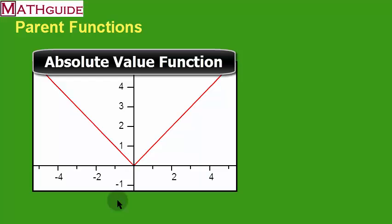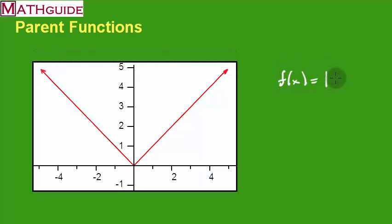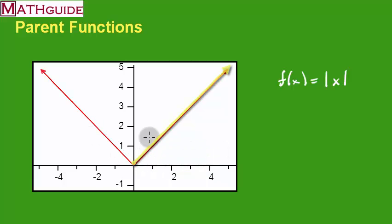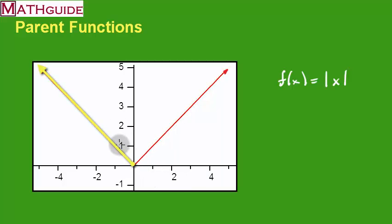For our next parent function, we have the absolute value function. The absolute value function can be written as the absolute value of x. You could always put values in front of the absolute value of x, inside the absolute value in front of x, or even outside. We could stretch this, bring these branches closer together or farther apart. In general, it looks like a v-shape where the vertex can be anywhere in the xy-plane. The right side looks like y equals x, and the left side looks like y equals negative x — put together to make one v-shape.